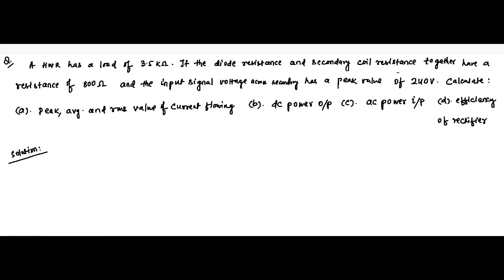The forward resistance of the diode and secondary coil resistance together, and the input signal voltage across the secondary has a peak value of 240 volt — that is the maximum value across the secondary winding. It has been asked to calculate the peak, average, and RMS value of the current flowing, the DC power output, the AC power input, and the efficiency of the rectifier.